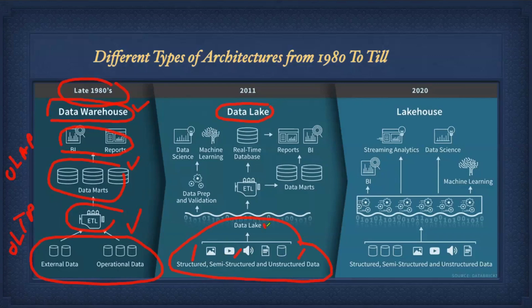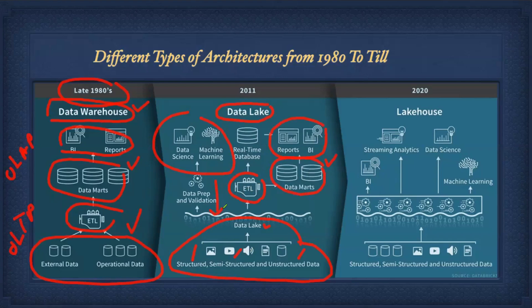Once data is available on the data lake, we use an ETL tool to read and process it. On-premises, these are mostly Scala or Java-based projects, while on the cloud more PySpark projects are used. We convert data into structured format and load it into a separate data warehouse for reporting. For advanced analytics, data science, and machine learning, teams read data directly from the data lake, which has major advantages like unlimited storage and support for any type of data.